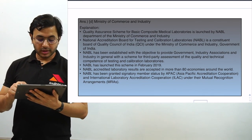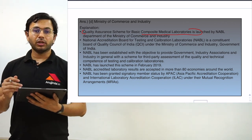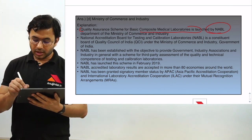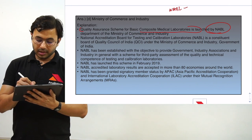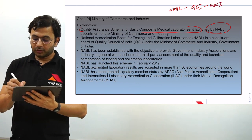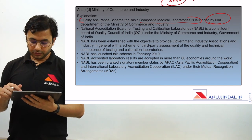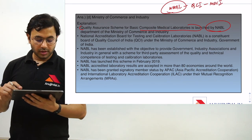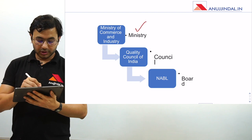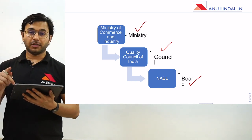The basic purpose of the Quality Assurance Scheme for Basic Composite Medical Laboratories is to ensure that laboratories in the country are able to comply with certain quality standards. These quality standards are determined by NABL — the National Accreditation Board for Testing and Calibration Laboratories — and NABL comes under QCI, the Quality Council of India, which in turn comes under the Ministry of Commerce and Industry. Therefore, this particular scheme falls under NABL, which is under the Ministry of Commerce and Industry. The hierarchy to remember: Ministry of Commerce and Industry → Quality Council of India → NABL.